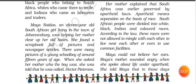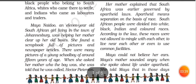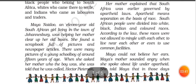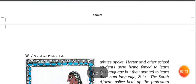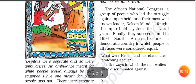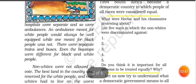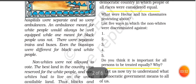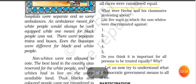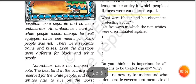She told Maya that in those days, even hospitals were separate. When there was a hospital, it was separate. The ambulances were separate. White people were separated. There were many facilities for white people, but black people were not given the same. Hospitals and ambulances were not accessible to black people.